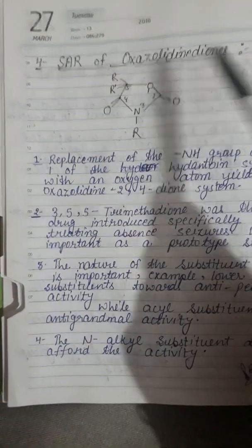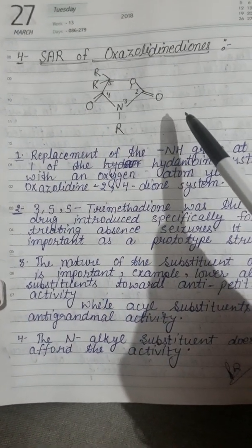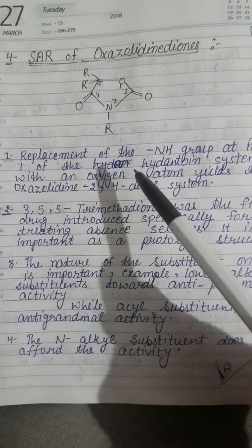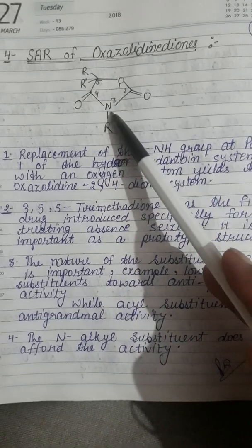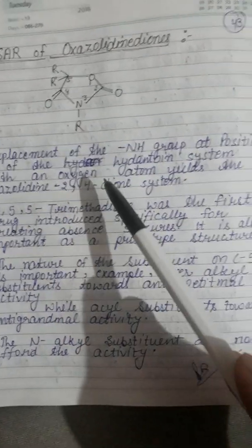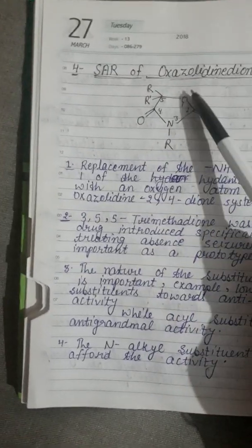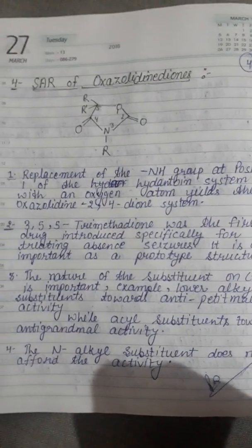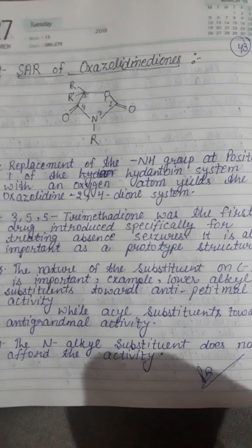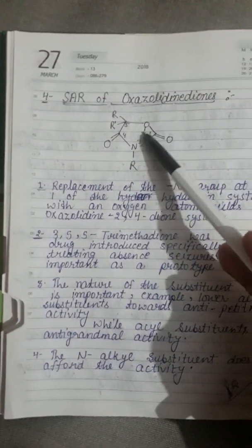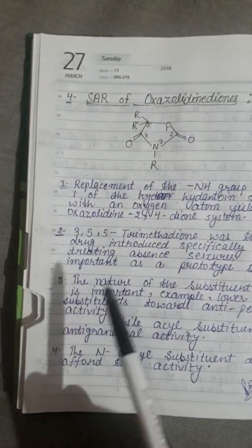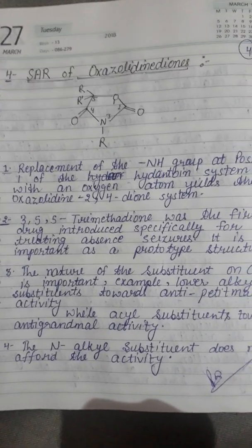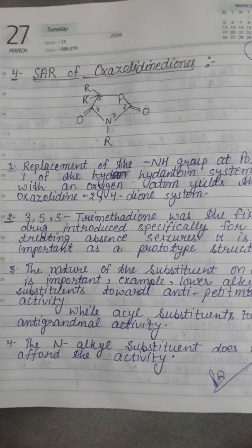The fourth category is SAR of oxazolidinediones. In this structure, replacement of the NH group at position 1 of the hydantoin system with an oxygen atom yields the oxazolidine-2,4-dione system — meaning replacement of nitrogen with oxygen.